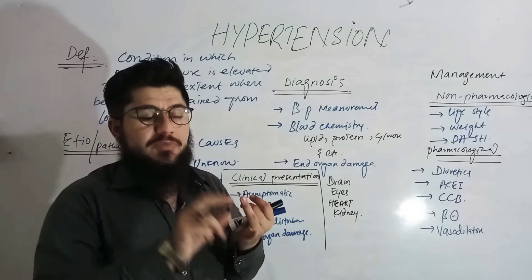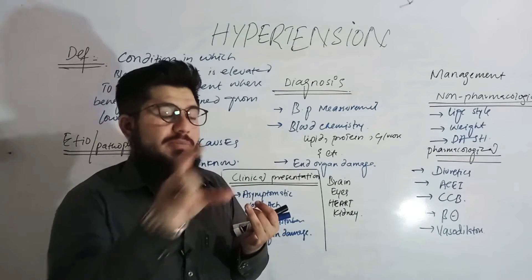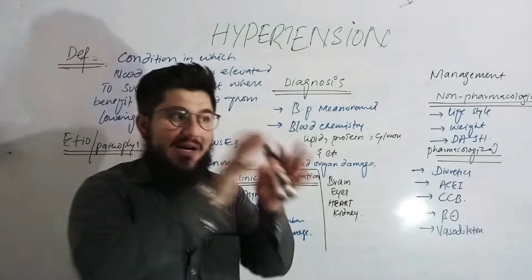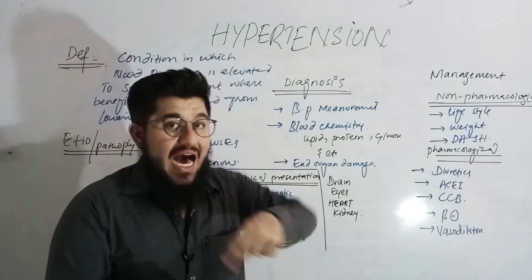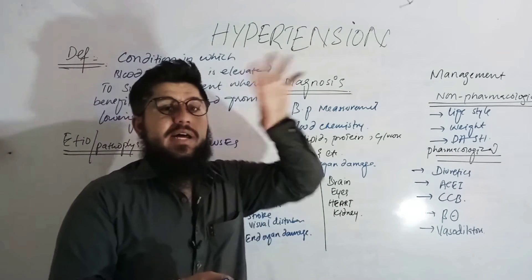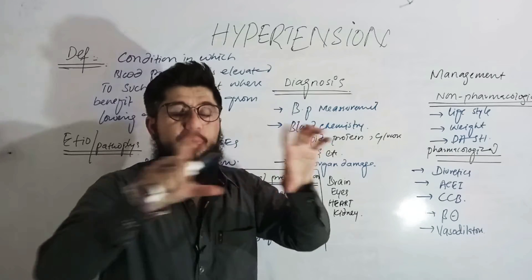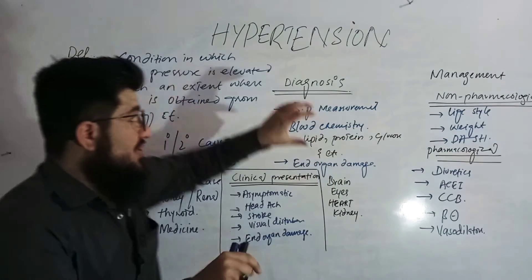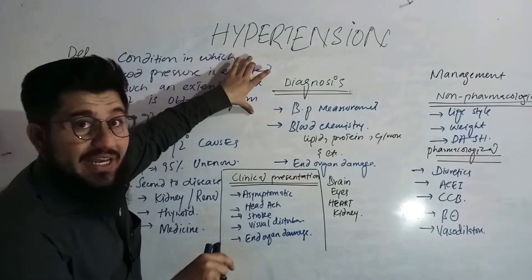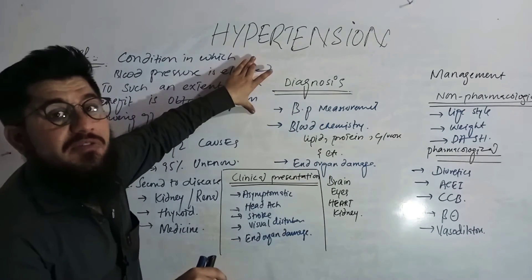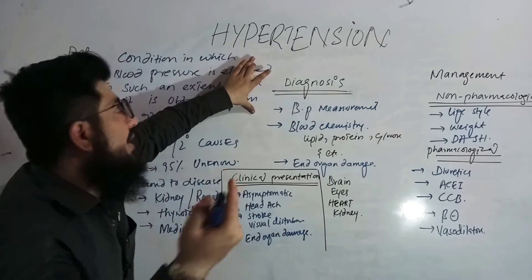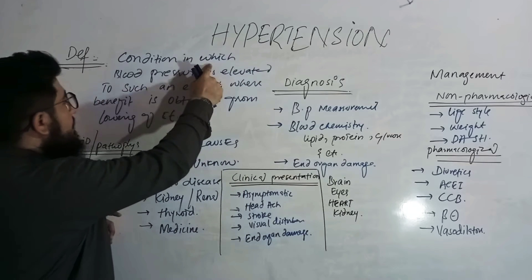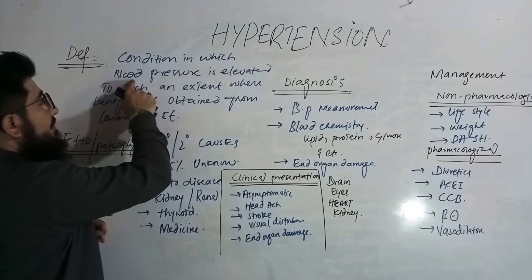Blood pressure is the pressure of the blood on the blood vessels. High blood pressure is called hypertension. That's the very simple definition. Now let's move to a more logical and medical definition.